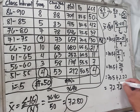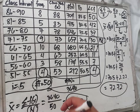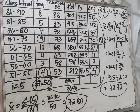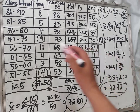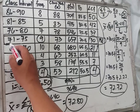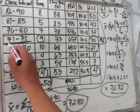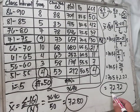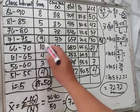The value of the median is 72.72. We can verify that 72.72 lies within the median class 71 to 75.